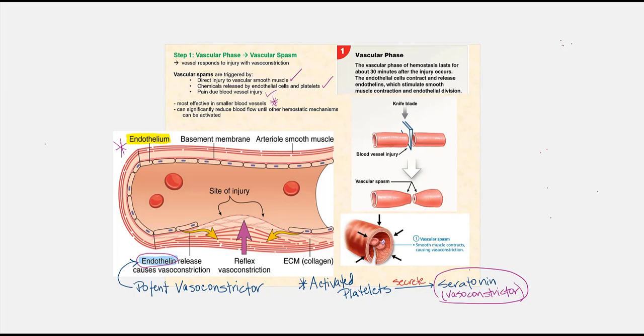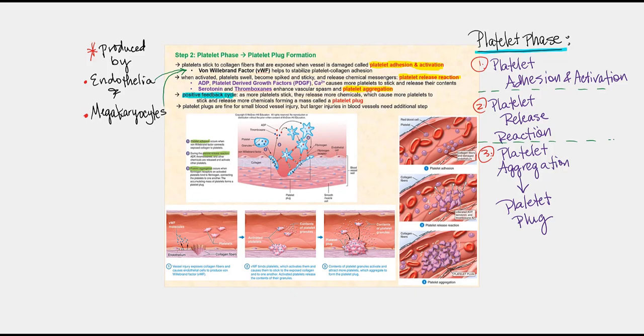Vascular spasm is temporary — it will only last for about 30 minutes after the injury occurs. Here in this diagram, the endothelium is secreting endothelin, and the target is the smooth muscle of the tunica media. The smooth muscle will contract, leading to vasoconstriction and narrowing of the lumen at the site of the injury, minimizing blood loss.